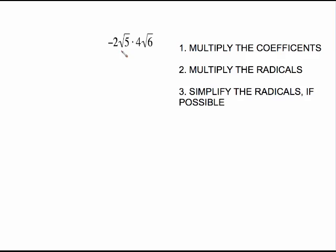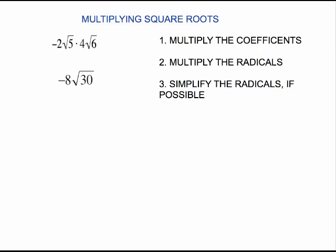If you have coefficients in front of the square root, your process is: number one, multiply the coefficients together — multiply the outsides together — then multiply the radicals, which means multiply the insides together, and then simplify the radical if possible. So here, negative 2 times 4 is negative 8, and radical 5 times radical 6 is radical 30.